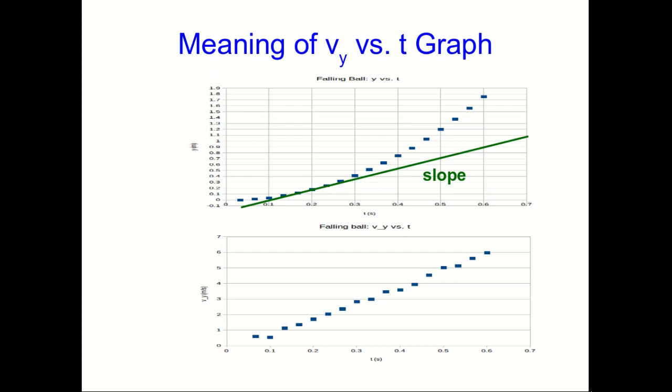But in any case, once we have the value of that slope, we then plot it as the value of vy at that time. Now we move on to a different time and find the slope there. And we plot that as the vy at that time. And that gives us our whole vy versus t graph.